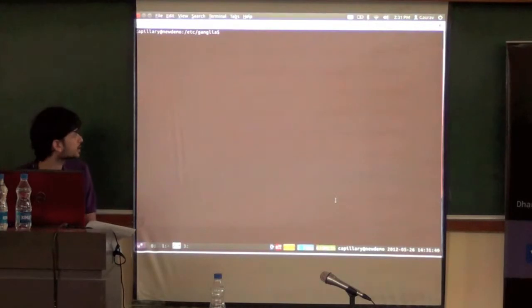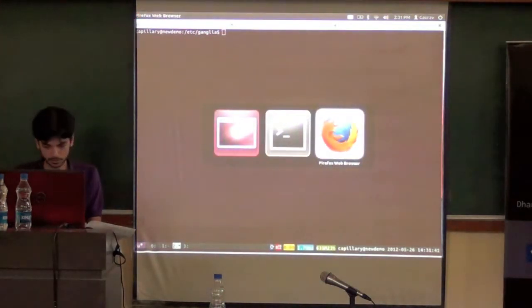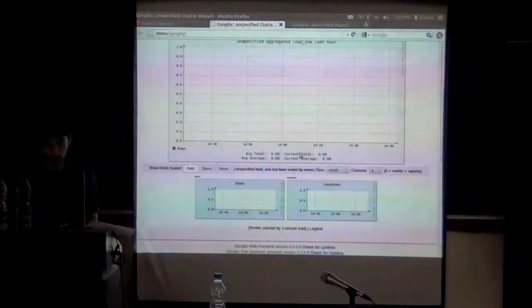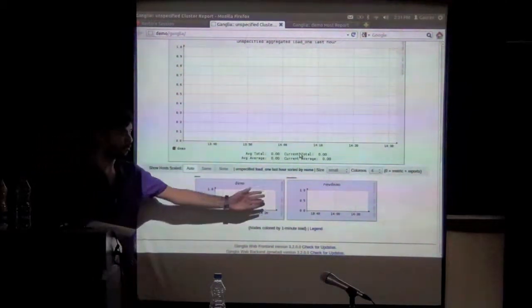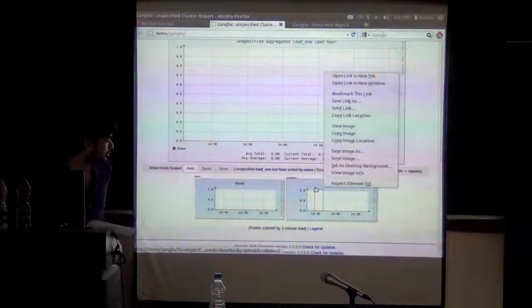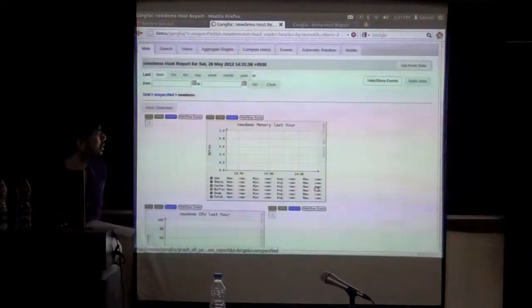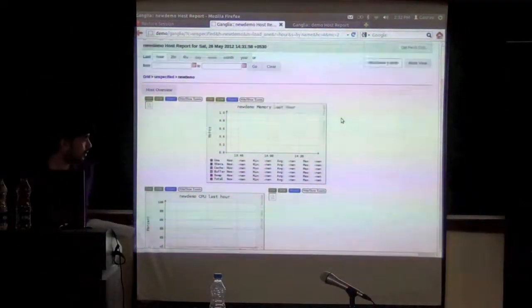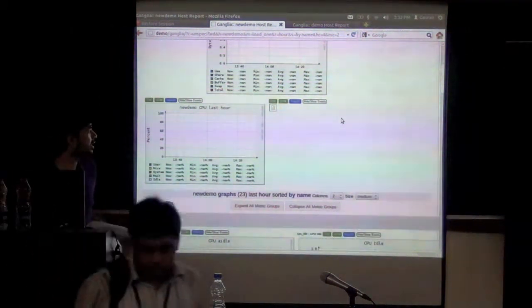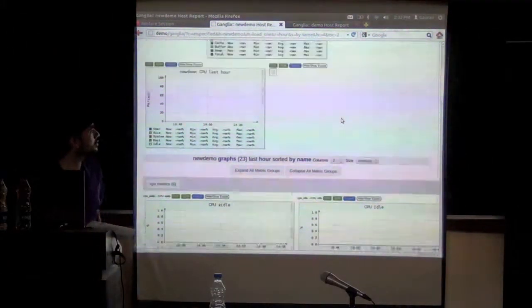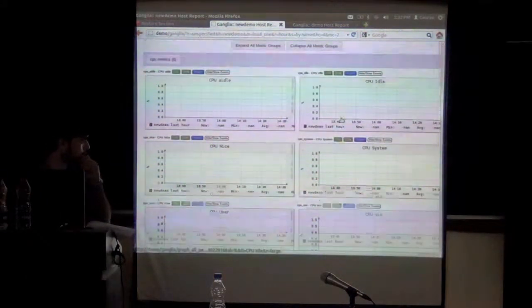I restarted the Ganglia GMOND after the configuration. A new demo host already shows up here and soon the metric values will appear. The new demo host on which I just installed. Only the metric metadata is loaded now, so all values are coming as not a number. All these values will soon appear.